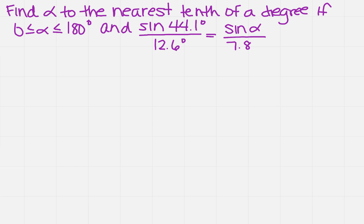Well, it kind of reminds me of some of the problems we've done in college algebra and even earlier in the term. I know those are two proportions, so what if I set those equal to one another? So let's say I get 12.6 times the sine of alpha equals 7.8 sine 44.1 degrees.